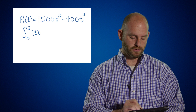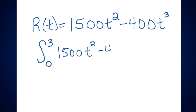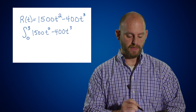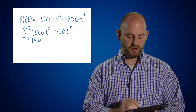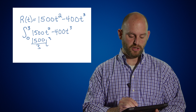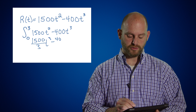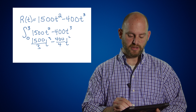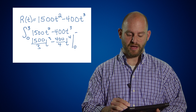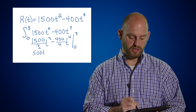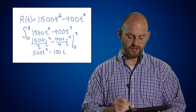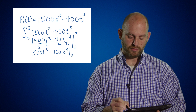I'm going to put my rate into the equation. To integrate this rate of change function, we use the power rule — add one to the exponent and divide by the new exponent. That gives us 1500 divided by 3 times t cubed, minus 400 divided by 4 times t to the fourth, evaluated from zero to three. Simplified, that's 500t cubed minus 100t to the fourth, from hour zero to hour three.